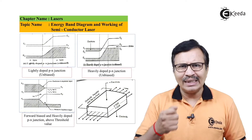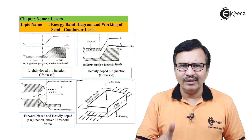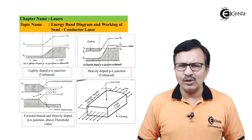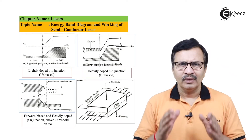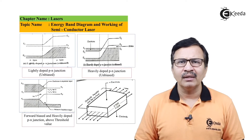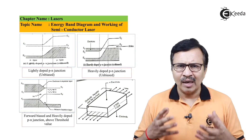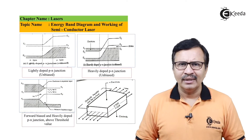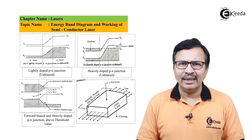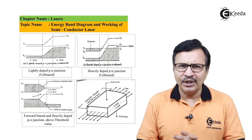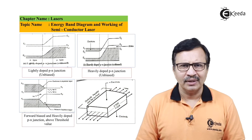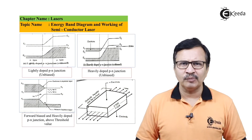As we slowly increase the forward bias beyond a certain threshold value, electrons and holes are injected in a higher amount. The rate of injection becomes far higher than the rate of recombination, and due to this, population inversion is achieved — which is the required condition for lasing action.